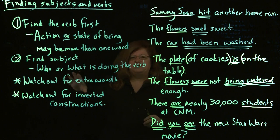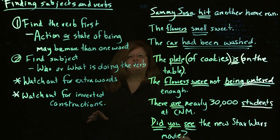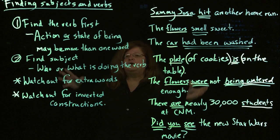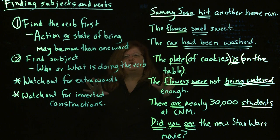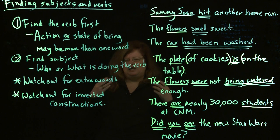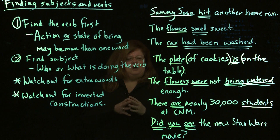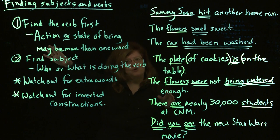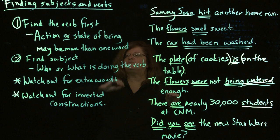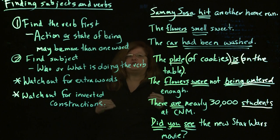So this is a key building block, as I've mentioned: find the subjects and verbs in a sentence, and that will give you a tool to deal with the sentence in general for other grammar issues. Find the verb first — that's the easy way. Find the verb first, ask who or what is doing the verb, and presto — you now have the subject and the verb.